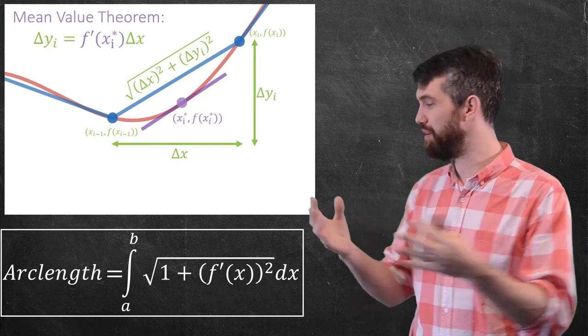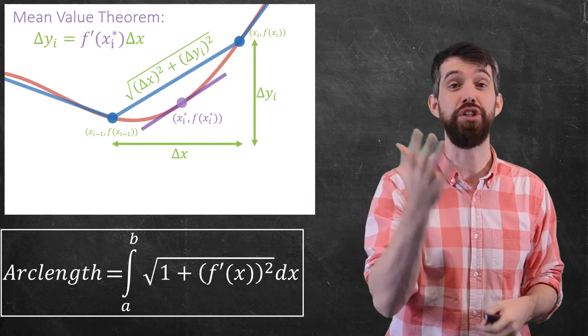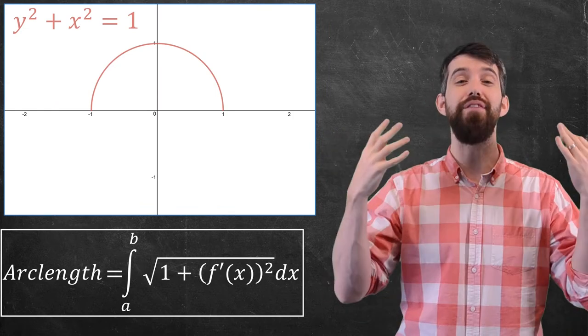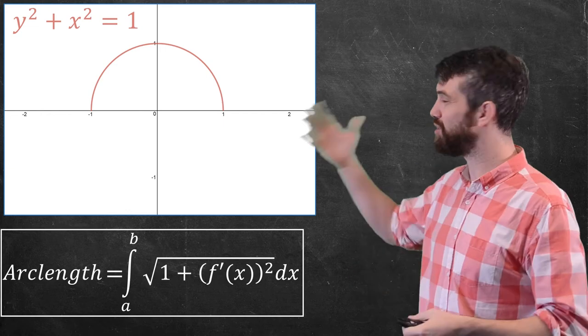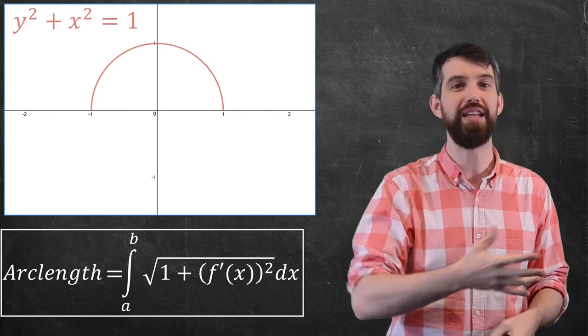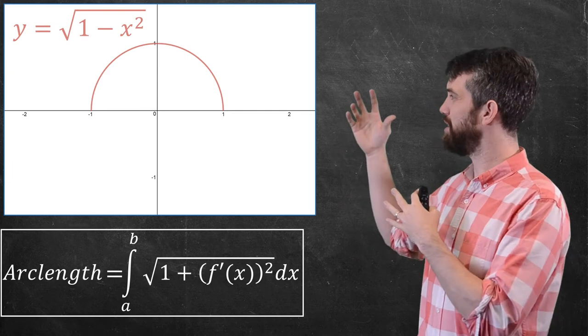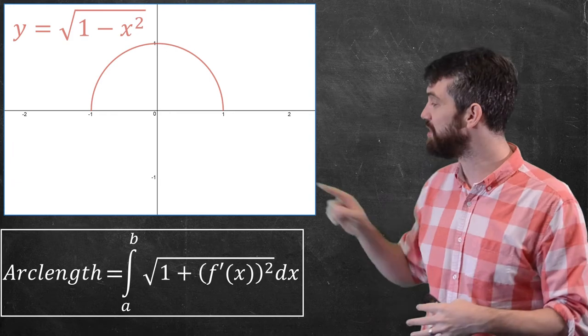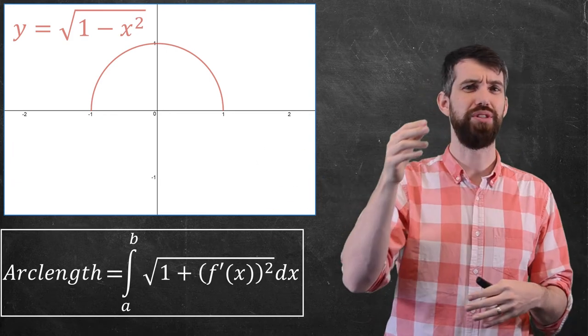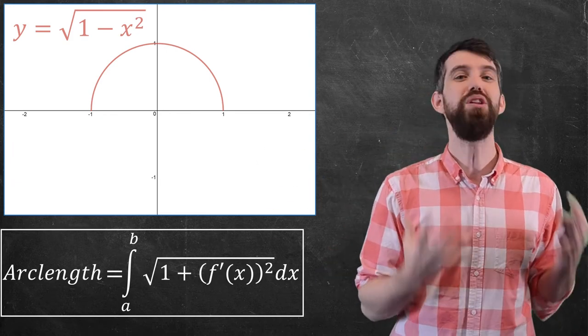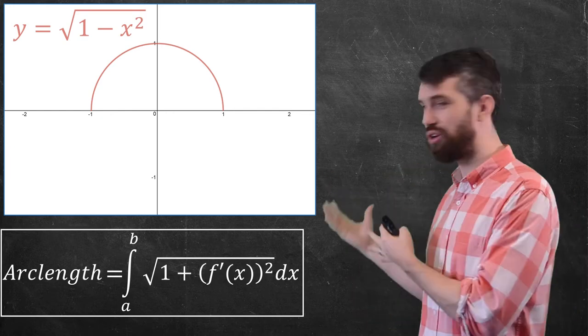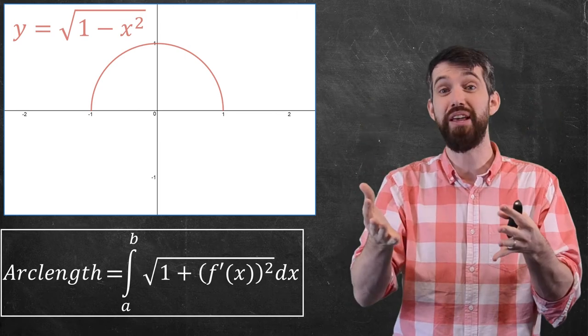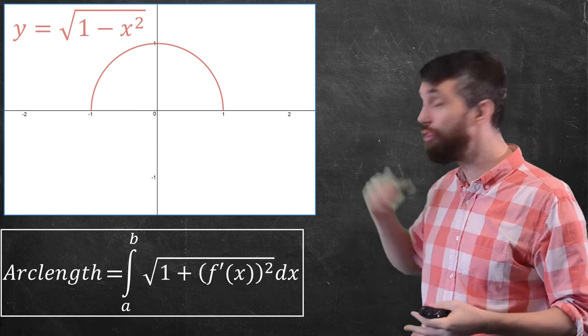Well now that I have the formula, let me go and actually do a specific example. So the example that I want to do is the circumference of half of a circle. Generically, if I have y squared plus x squared equal to 1, that's my equation of a circle. And I'm just going to take the positive root so I get y is equal to square root of 1 minus x squared. That gives me the top half. If I chose the negative root, that would give me the bottom half. We know the arc length of a circle of radius 1. It's 2 pi the radius, so 2 pi, and if it's half of it, it's just going to be pi. So we want the arc length to be pi, but let's see if we get that from using our formula.